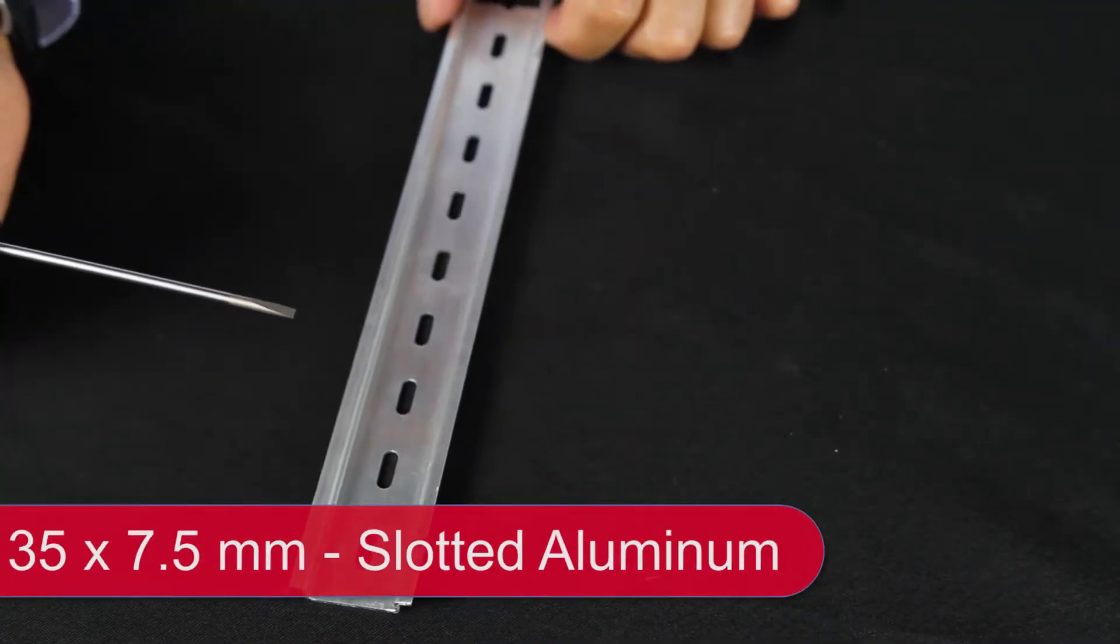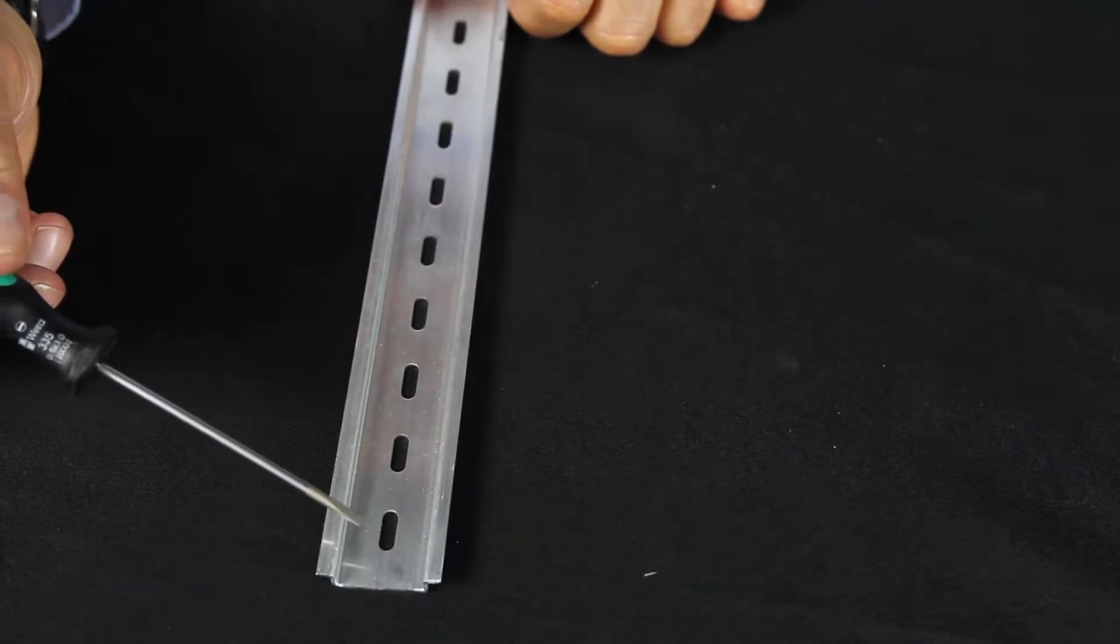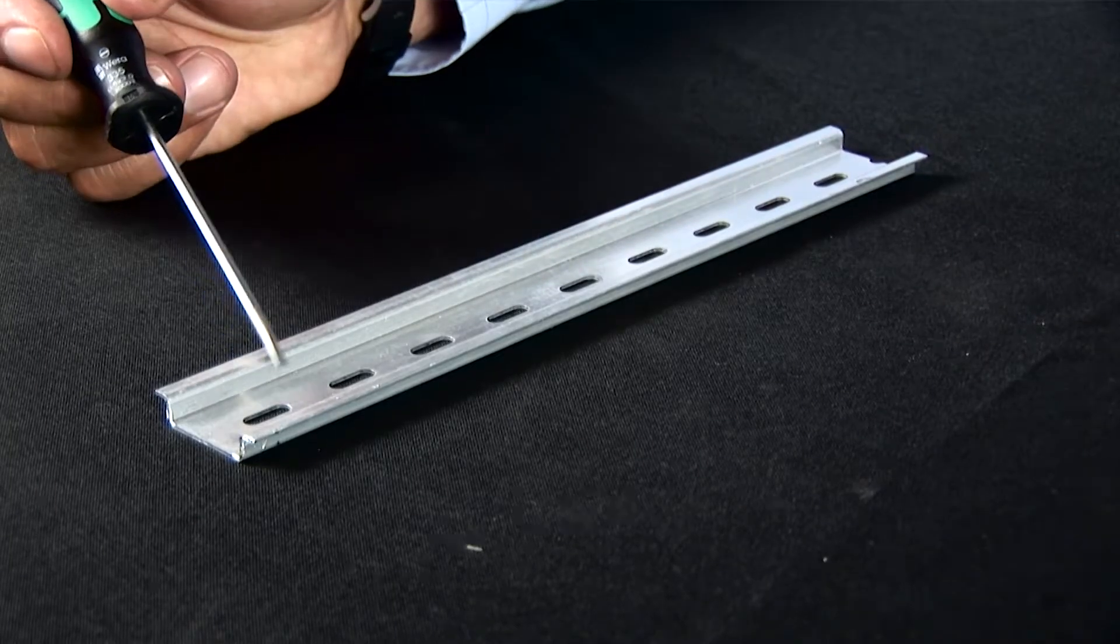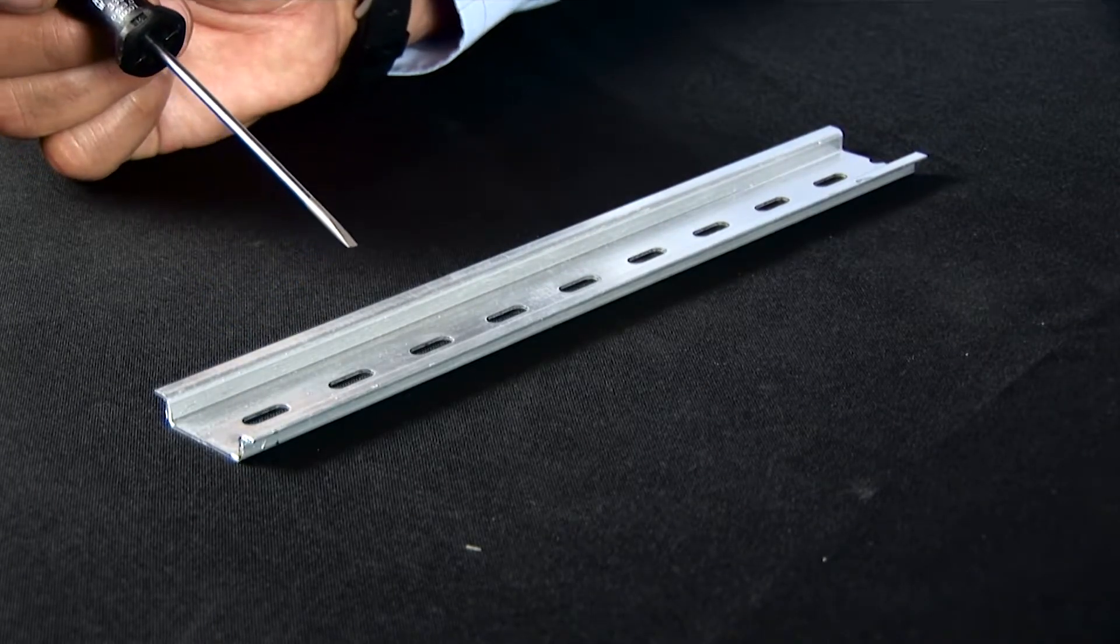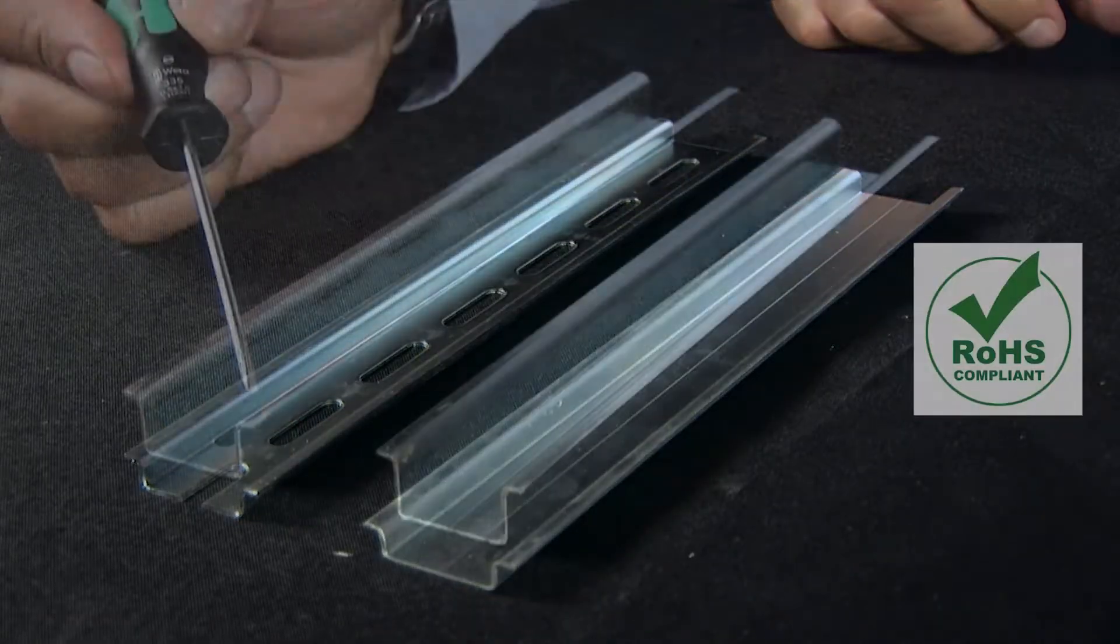Lastly, American Electrical offers aluminum DIN rail sections. These rails are slotted with one-inch slots on two-inch centers. All of our DIN rail is RoHS compliant.